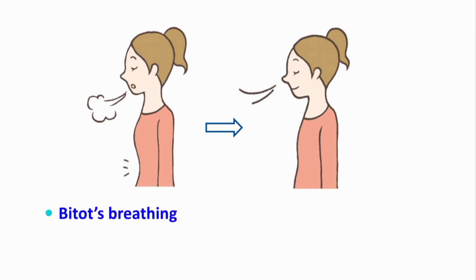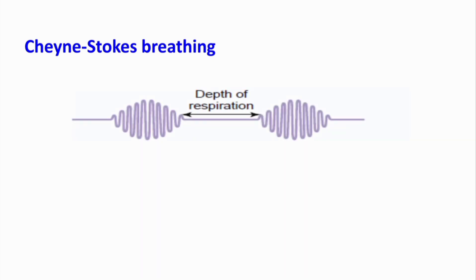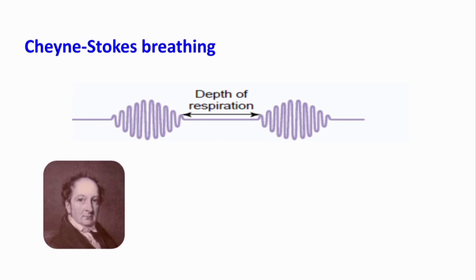Cheyne-Stokes breathing is a special type of periodic breathing characterized by slowly waxing and waning respiration occurring about every 40 to 60 seconds. It was described in the early 19th century by John Cheyne and William Stokes.